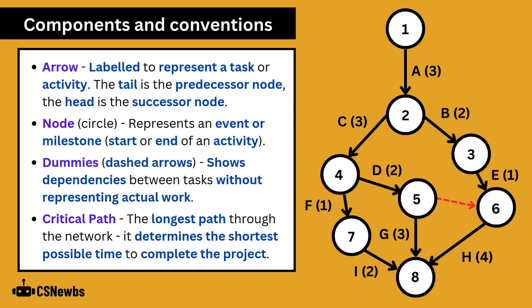Dummy activities or dummies are another component in arrow diagrams and these are represented by dashed arrows. They show dependencies between tasks without representing actual work. They have a completion time of zero and we'll look at those shortly.